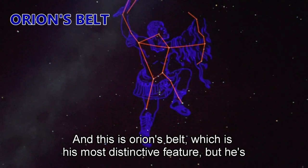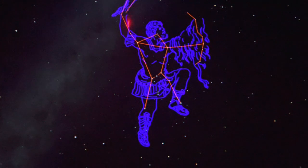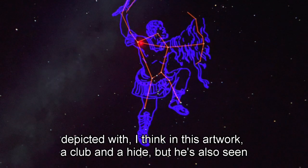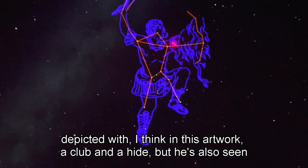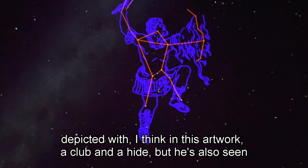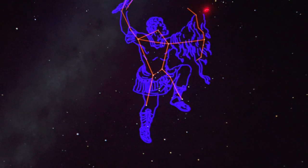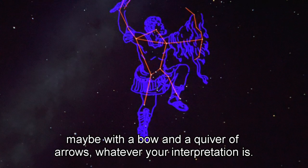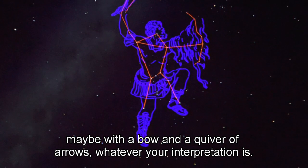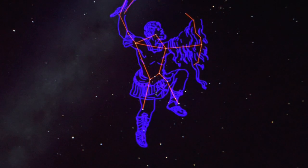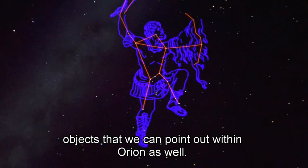This is Orion's belt, which is his most distinctive feature. He's also seen depicted with, in this artwork, a club and a hide, but he's also seen maybe with a bow and a quiver of arrows, whatever your interpretation is. There are some pretty cool objects that we can point out within Orion as well.